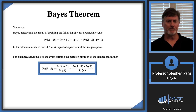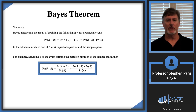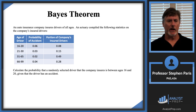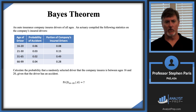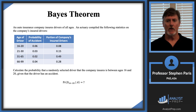Going back to the original exam P sample question: calculate the probability that a randomly selected driver is between ages 16 and 20, given that the driver has an accident. This is a standard Bayes theorem problem — one of the events forms the partition of the sample space. My suggestion is to just use the Venn diagram. We'll do another example in the next video.